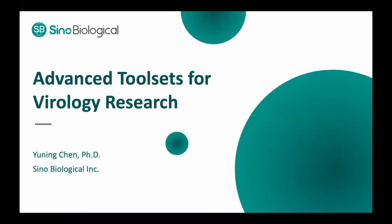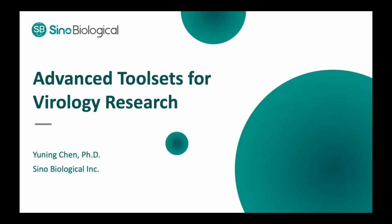Thank you, Jeff. Hello everyone — I'm Yuning Chen from Sino Biological, and today I'll give you a brief introduction to our product portfolio for infectious disease research. Sino Biological is a biotech company based in Beijing and a one-stop reagent and service provider. We have catalog products including genes, proteins, antibodies, and over 500 ELISA kits, and we also provide protein expression and ELISA kit and antibody development services. We have a rather comprehensive service portfolio that can facilitate everything from antibody drug discovery all the way to process optimization.